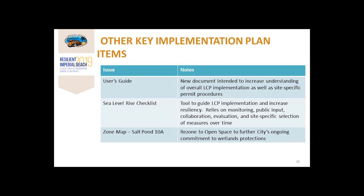Other key implementation plan items include a new user's guide, a new document that increases understanding of the LCP, how it's implemented, and provides the permit procedure process and a flow chart to help better understand discretionary projects. There's also a new sea level rise checklist, which is a tool to guide LCP implementation and increase resiliency, relying on monitoring, public input, collaboration, evaluation, and site-specific selection of measures over time. There's also an update to the zoning map, which would rezone Salt Pond 10A to open space to better fit the sensitive habitat and further the city's ongoing commitment to wetlands protections.